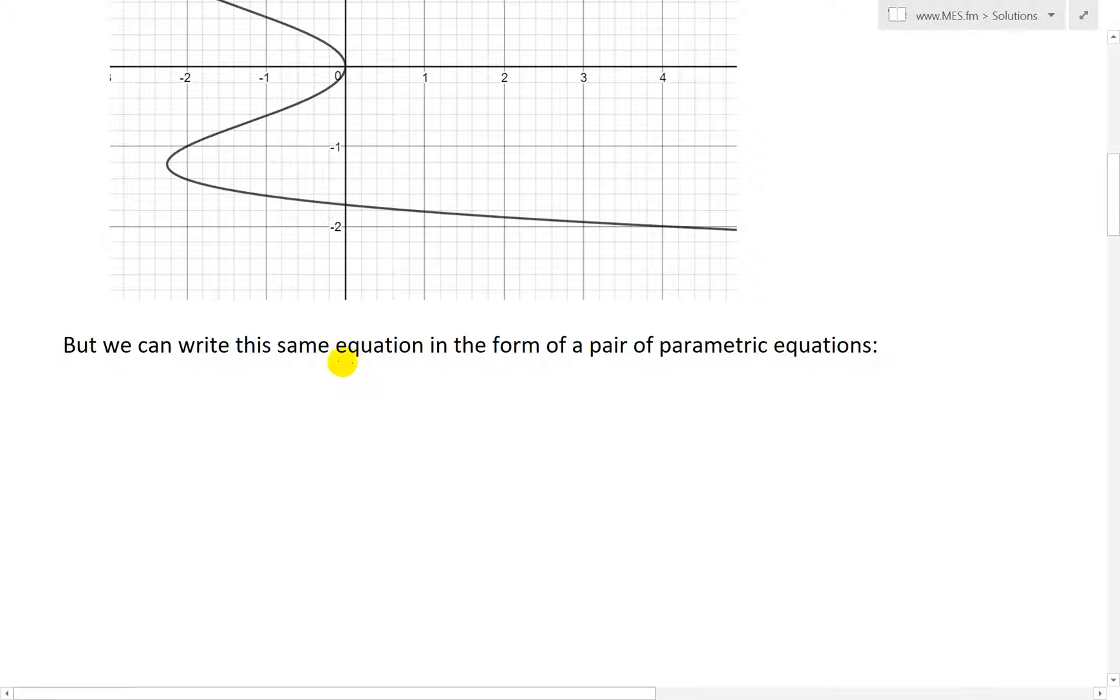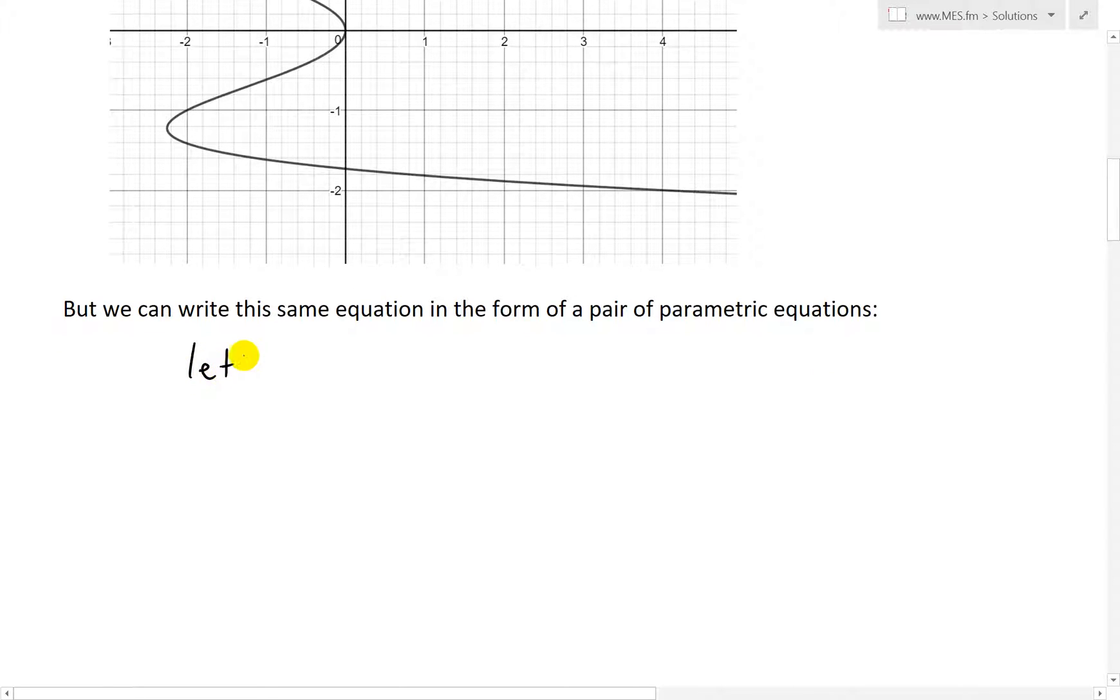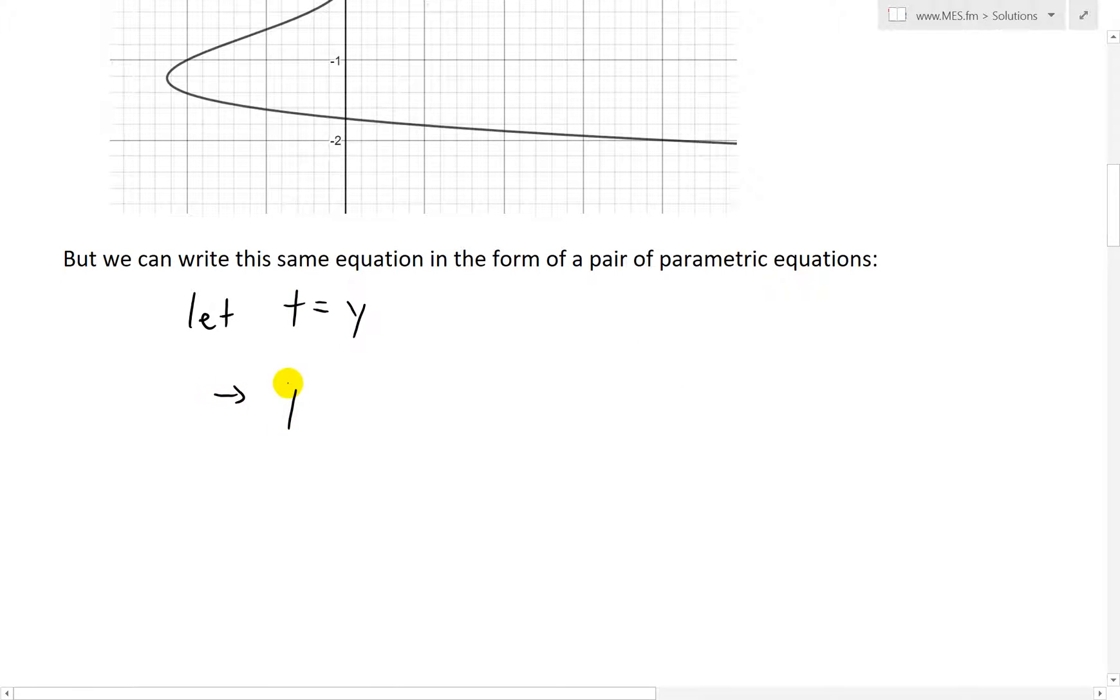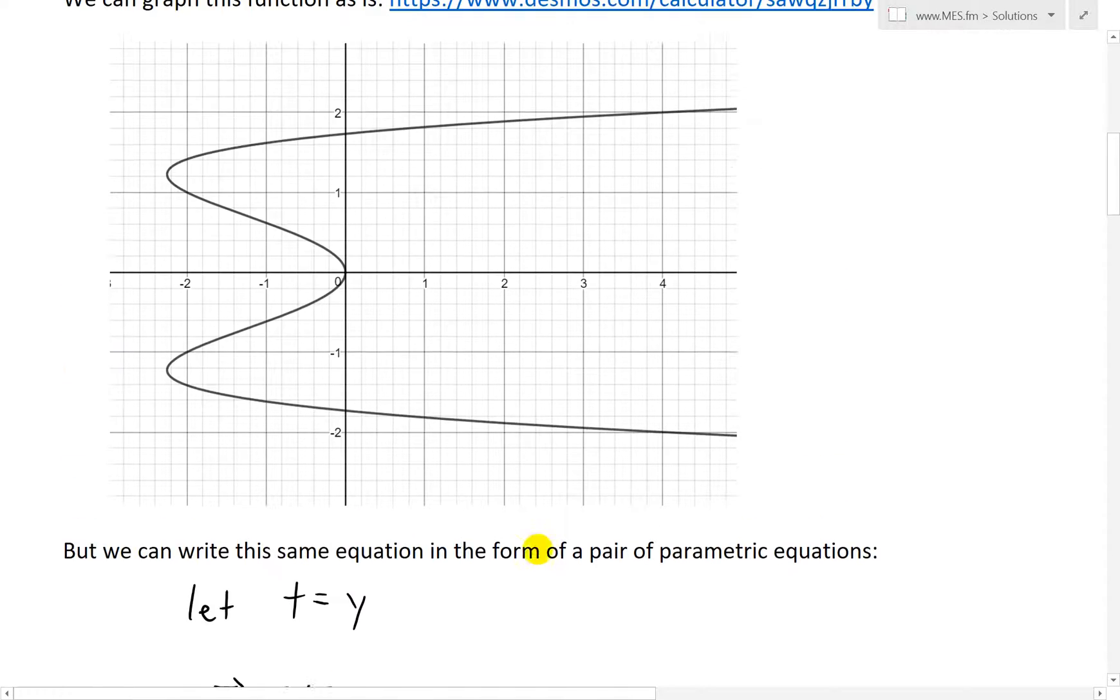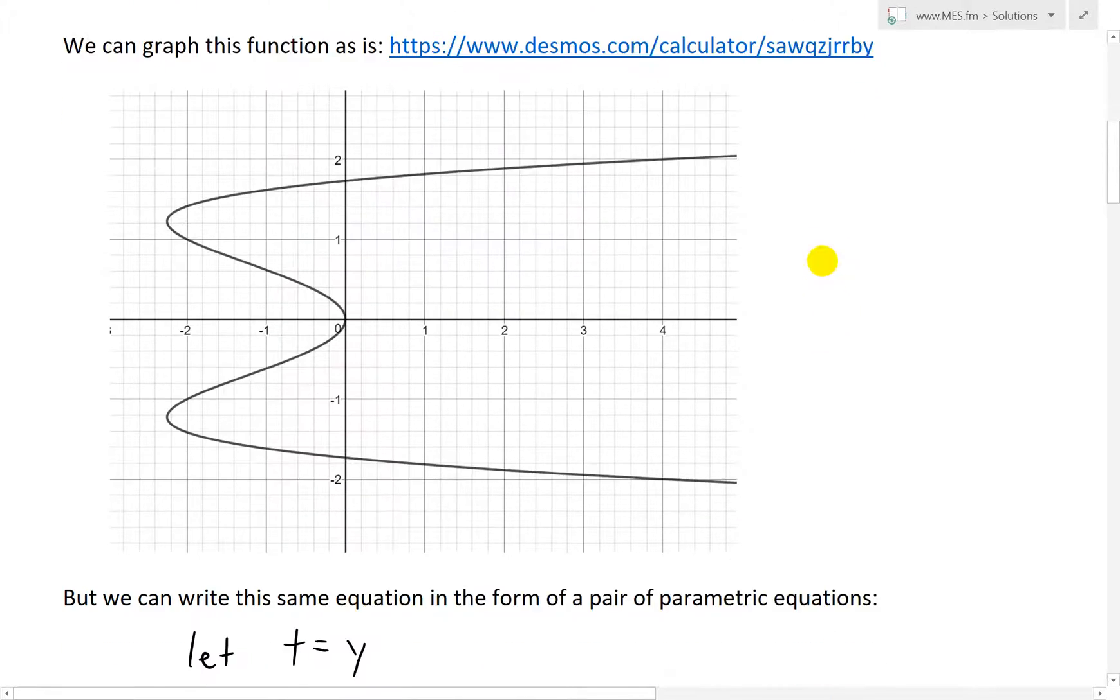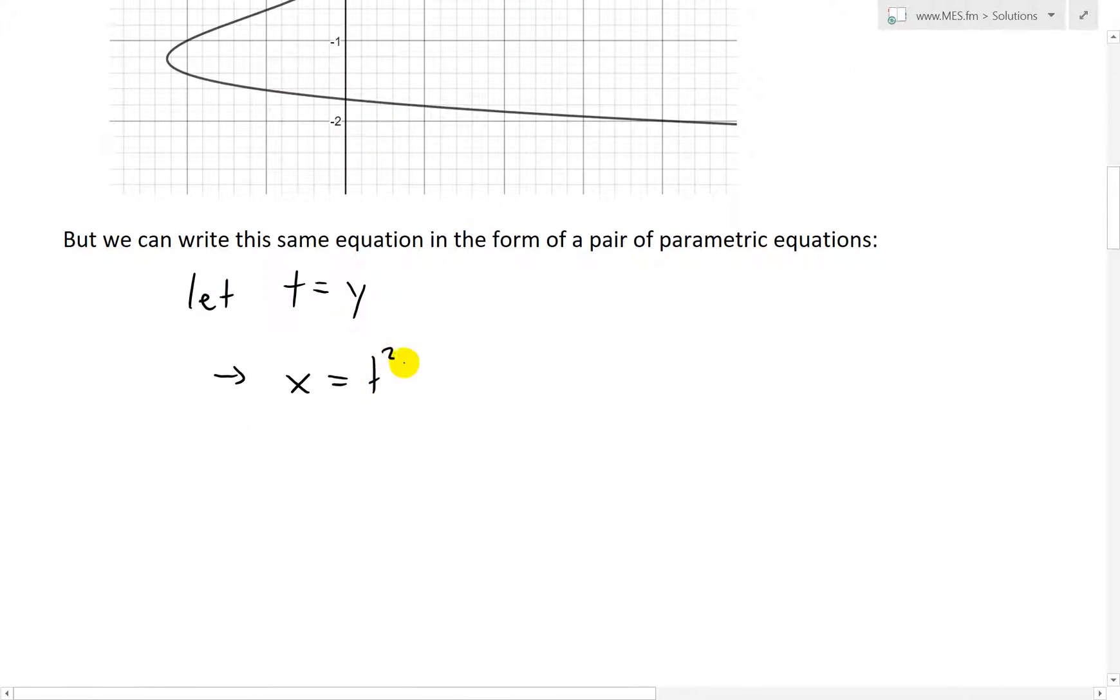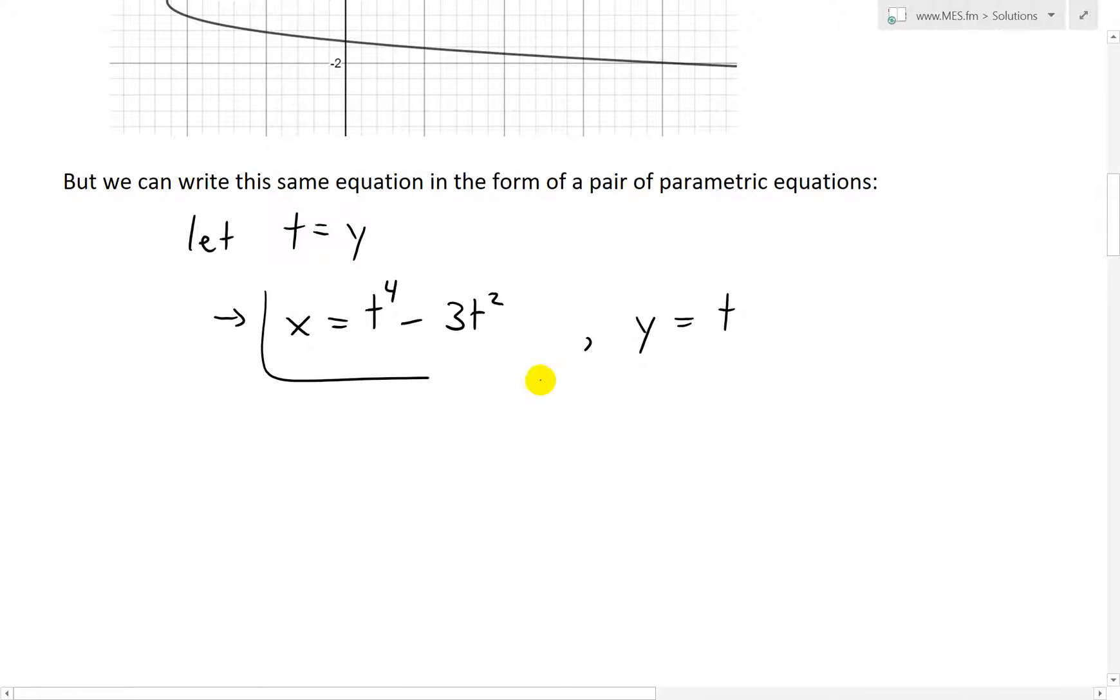We can write this same equation in the form of a pair of parametric equations. What we can do is let t, that's the parameter, equal to y. So then x is going to equal t to the power of 4 minus 3t squared. That's the first parametric equation, and the second one is just y equals t because we've set it equal to that. So now we have a pair of parametric equations.